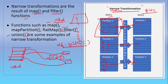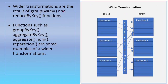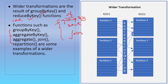Wide transformation is also called shuffle transformation. The best examples are groupBy, sort, join, reduceBy, and aggregate — these are wide transformation functions. If you are using sort, join, groupBy, or aggregation functions, then definitely these types of data frame functions are wide transformation, also called shuffle transformation.